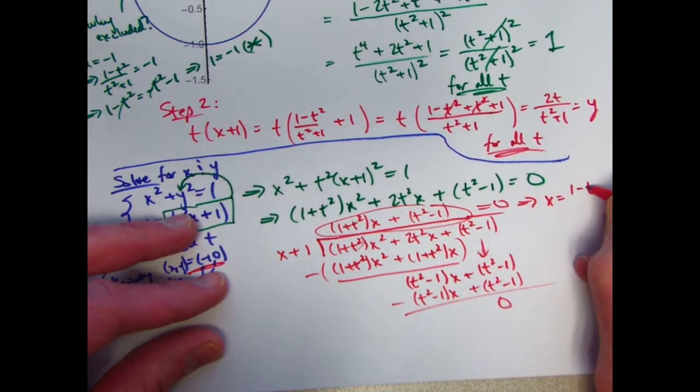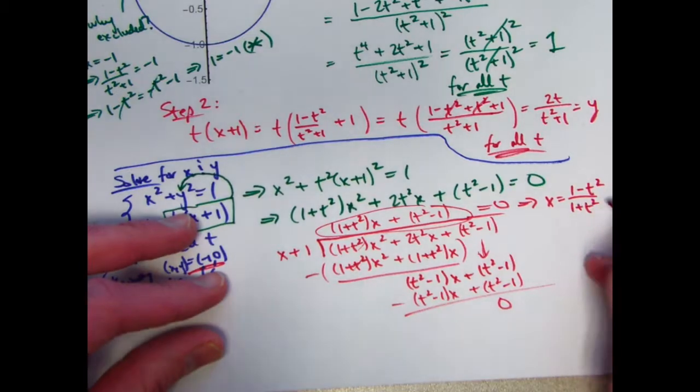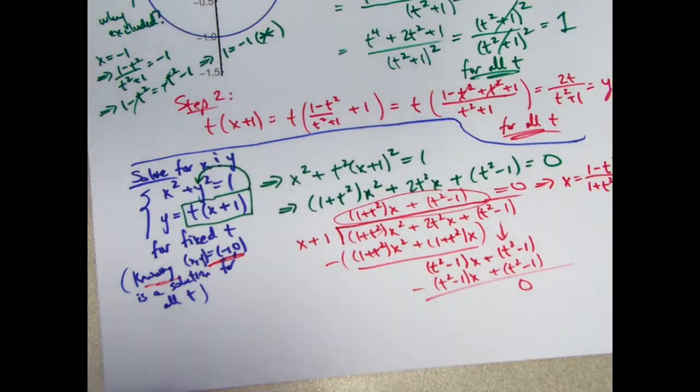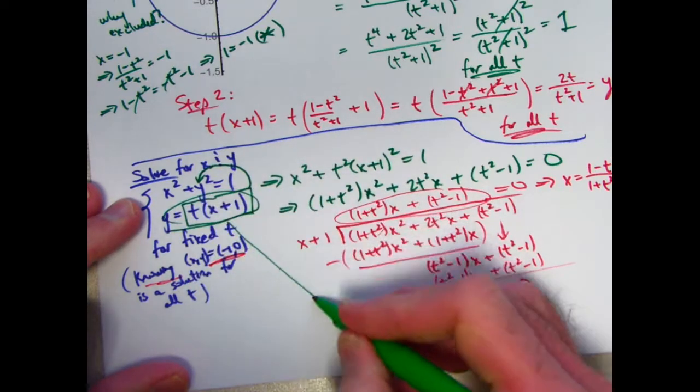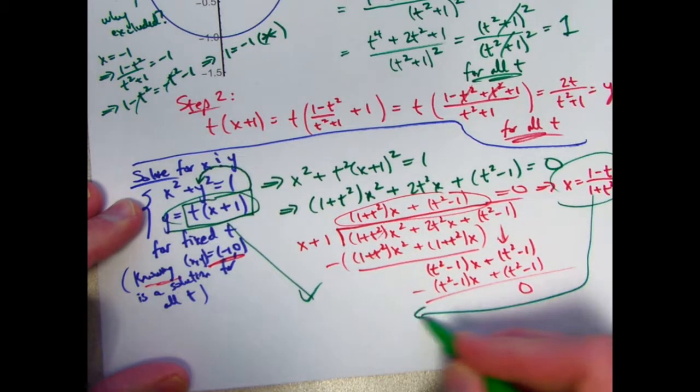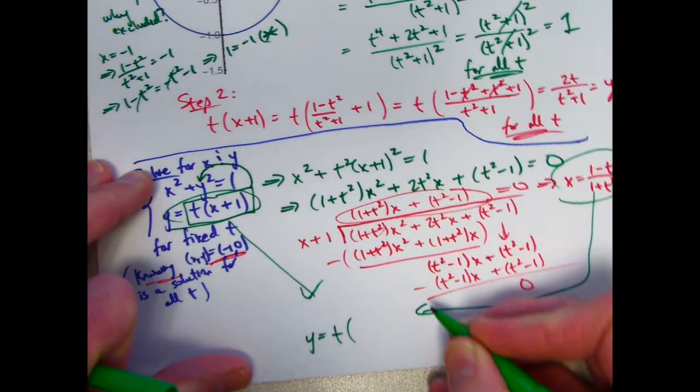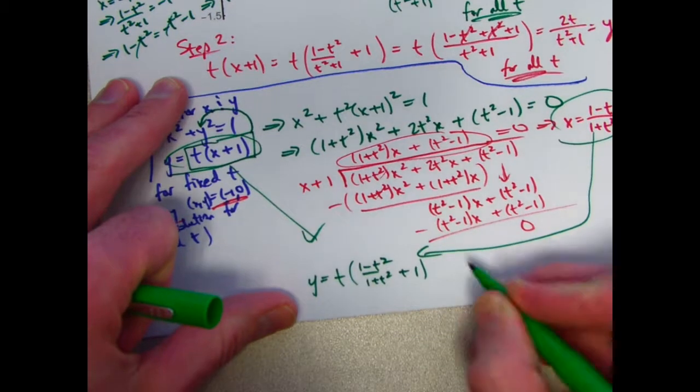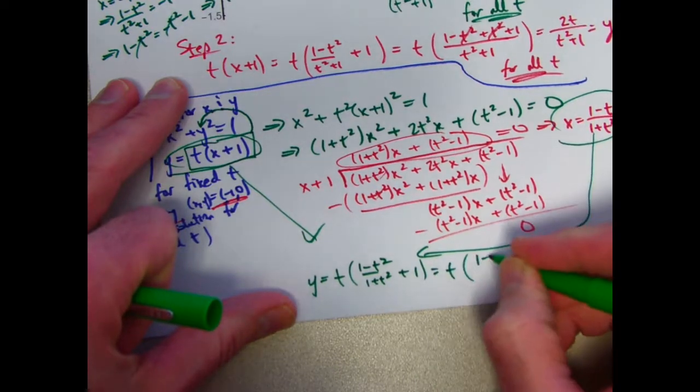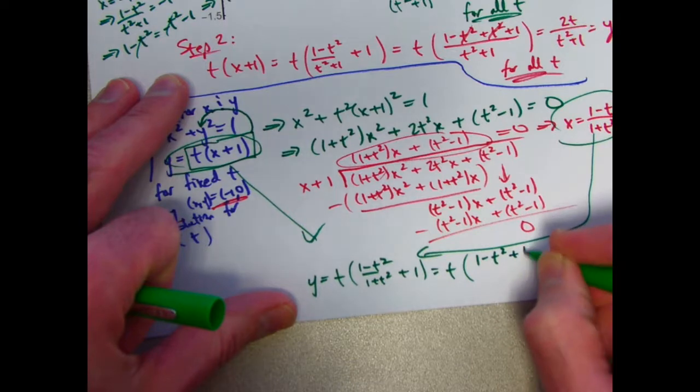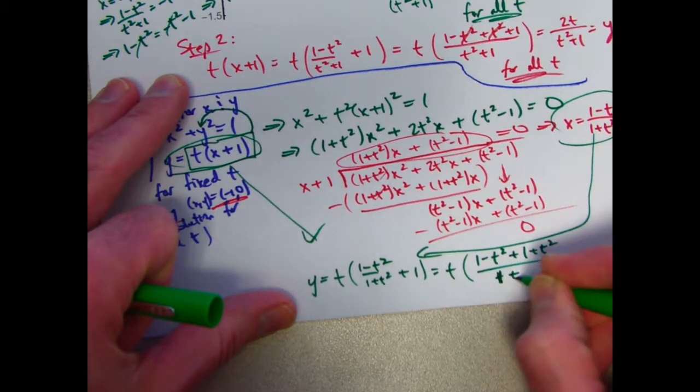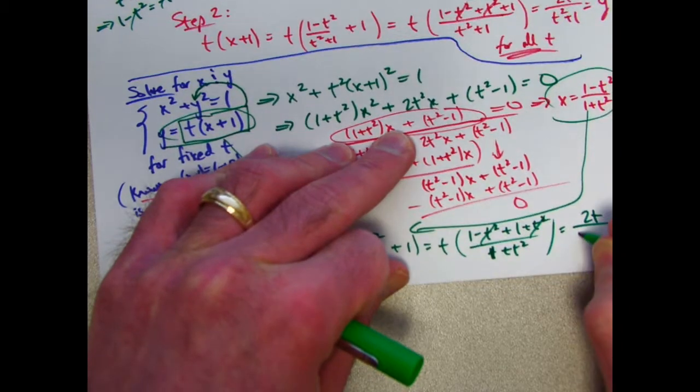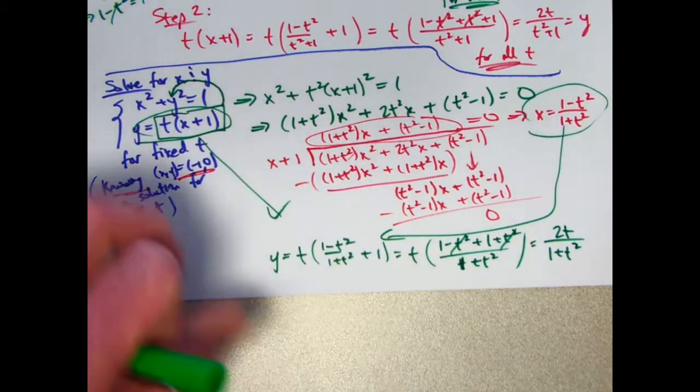Solve for x. You'll get (1-t²)/(1+t²), which is the same thing as this up there, which is what we wanted. And now one more final step here. Take this equation and this equation to figure out what y is. y is t times (x+1). ((1-t²)/(1+t²)) + 1. We did this before. Get a common denominator. You're going to have (1-t² + 1+t²)/(1+t²). The t² cancel. 1+1 is 2. Bring the t up on top. You get 2t/(1+t²). So that's the equation for y.